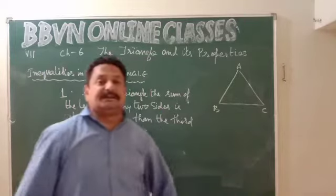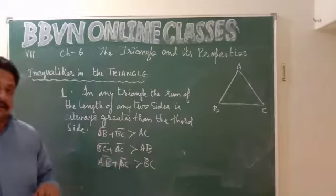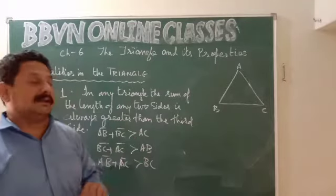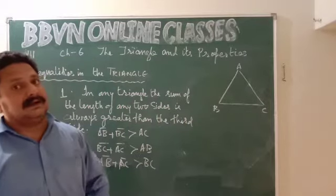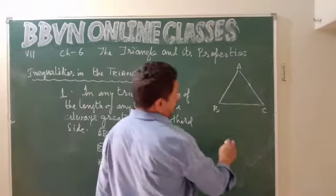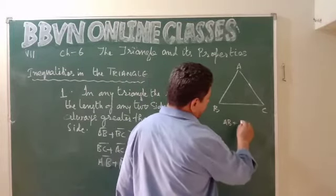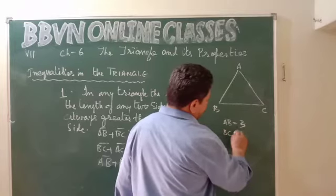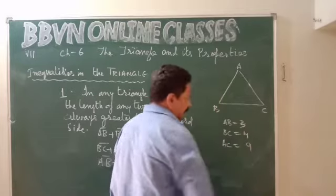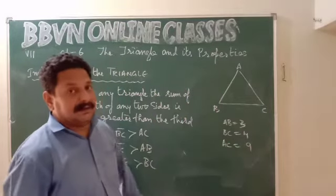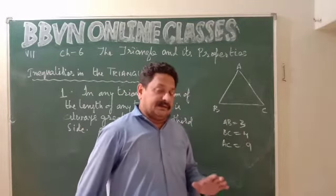Or BC plus AC will be greater than AB, or AB plus AC will be greater than BC. The sum of any two sides will always be greater than the third side. If this condition is not satisfied, a triangle cannot be formed at all. For example, if AB is 2 cm, BC is 3 cm, and AC is 9 cm — a triangle cannot be formed.